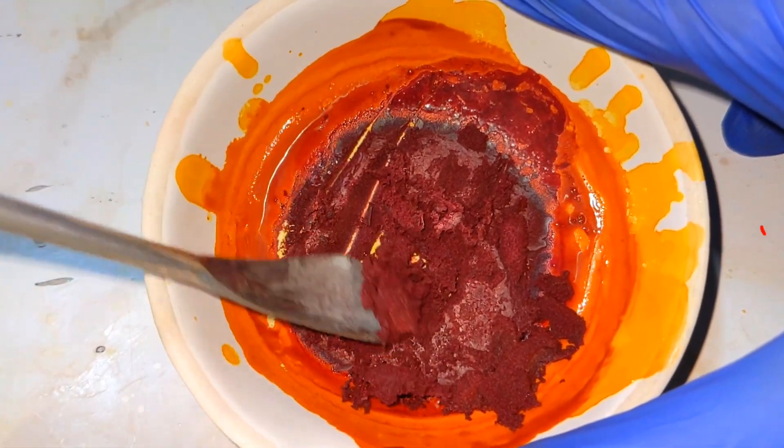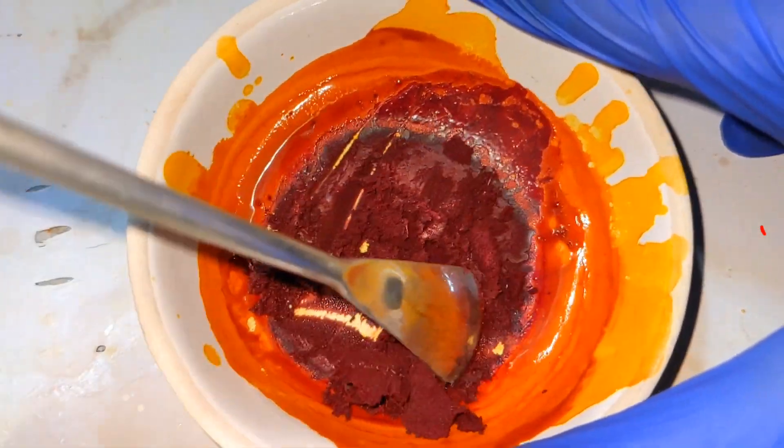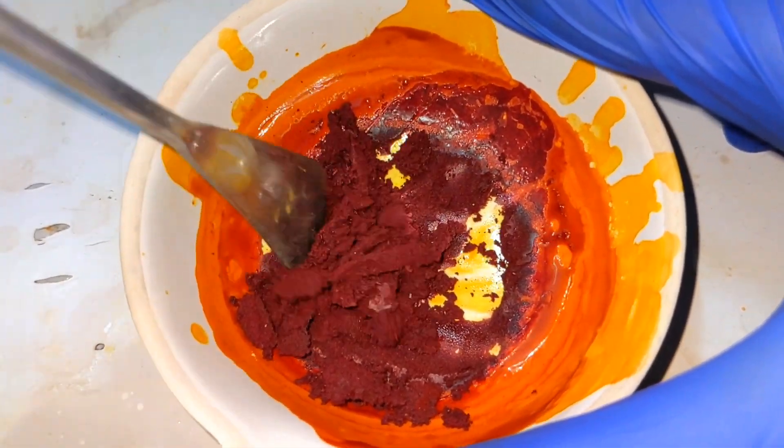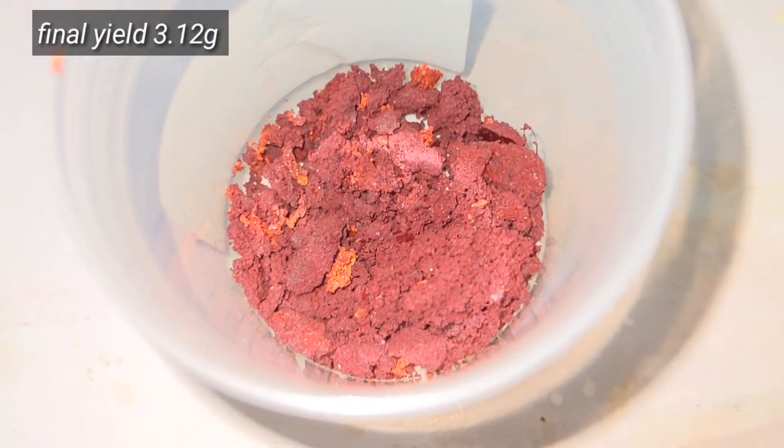The solid fluorescein was then taken out of the evaporating dish using a spatula. The final yield was 3.12 grams of fluorescein.